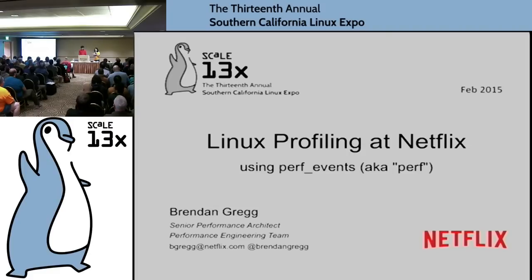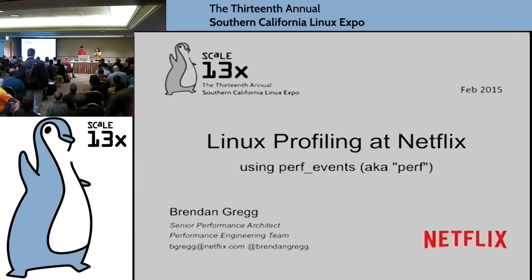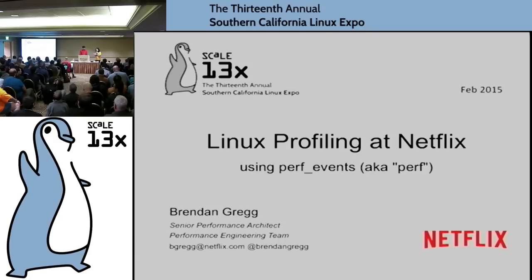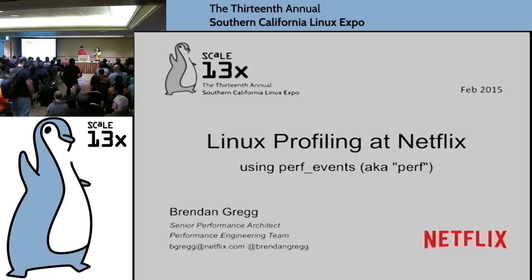Profiling can show what your Linux kernel and applications are doing in detail across all software stack layers. This talk shows how we are using Linux perf events and flame graphs at Netflix to understand CPU usage in detail, optimize cloud usage, solve performance issues, and identify regressions. This will be more than just an intro — profiling difficult targets including Java and Node.js will be covered, including the easy examples, the hard, and the cutting edge.